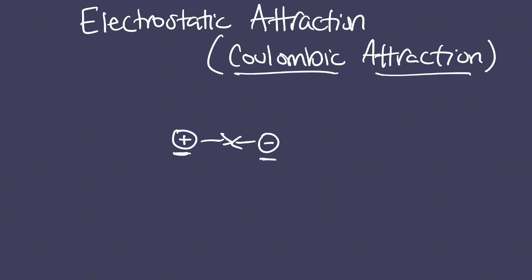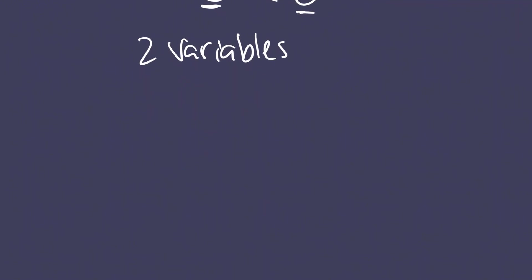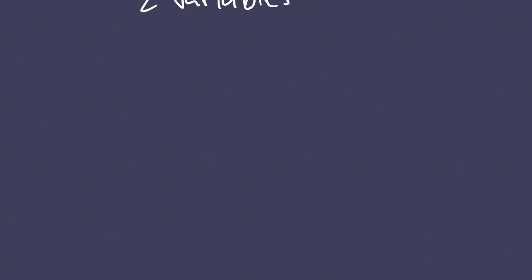So there are basically two variables that affect the strength of the attraction. The first variable that we're going to talk about is basically distance.